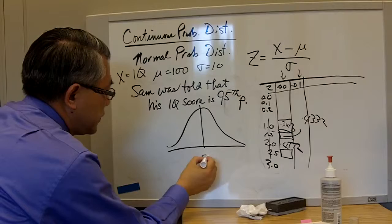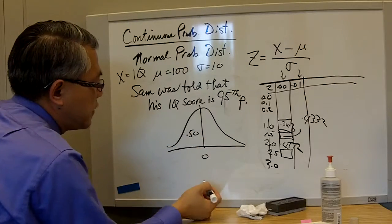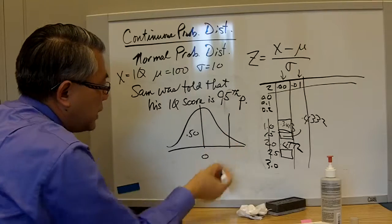So here is 0 and we have 50% to the left, we have 50% to the right,